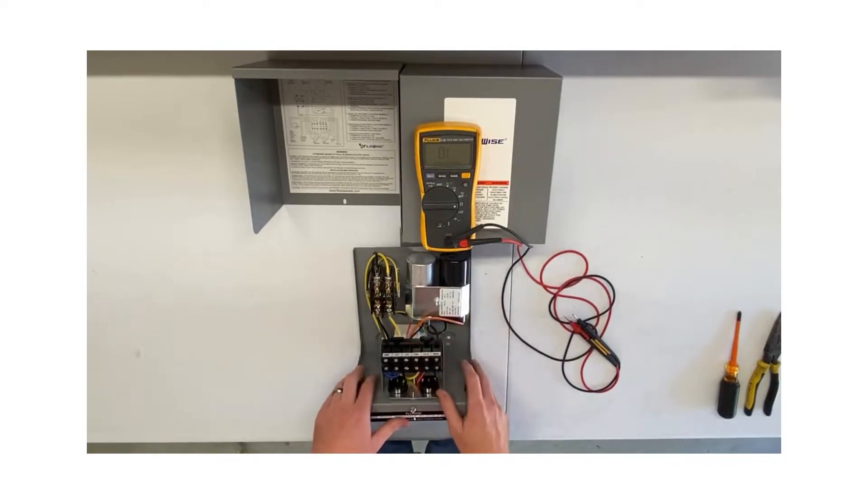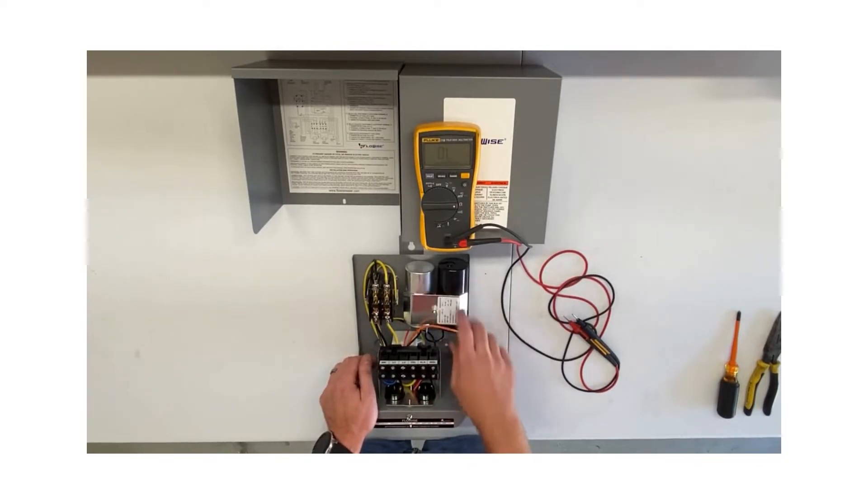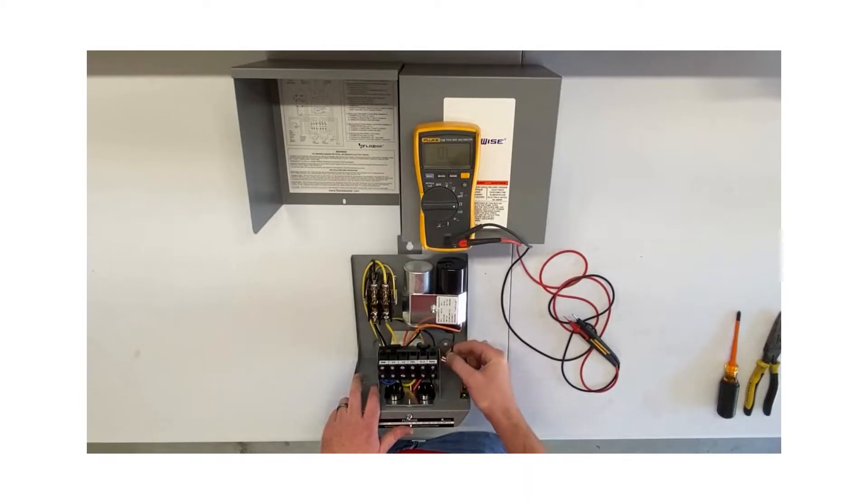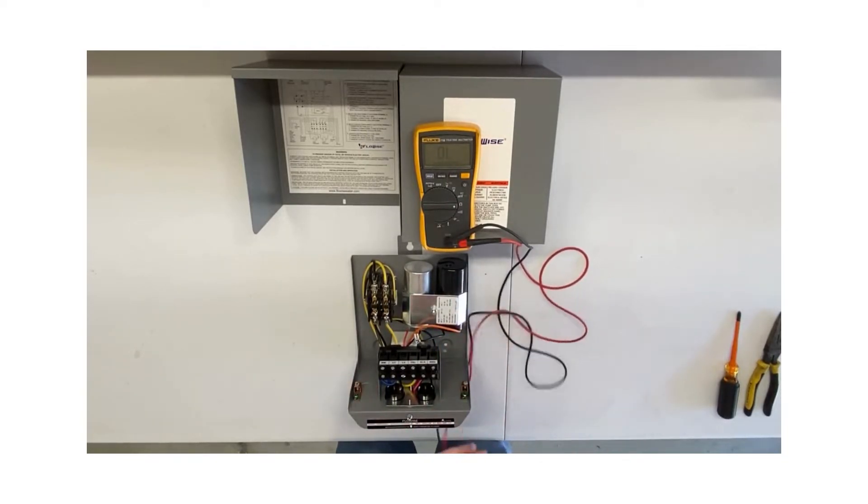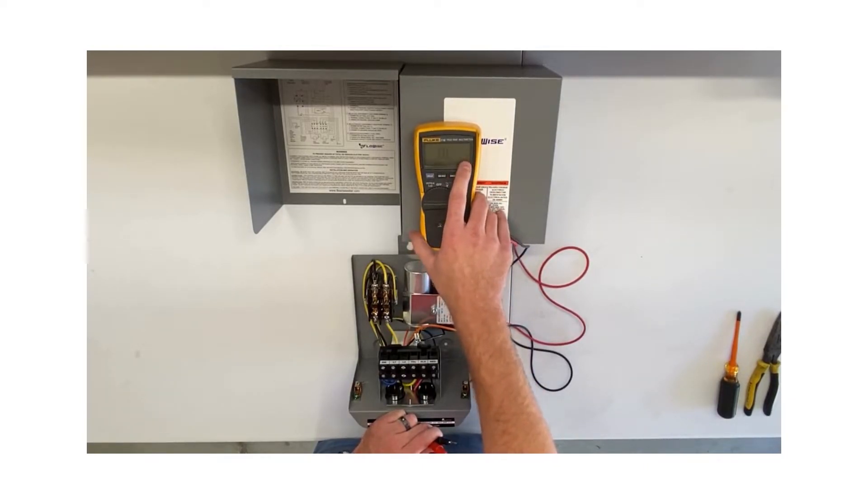This is probably one of the most common points of failure in the box—the capacitor. Our testing procedure is going to be the same for the start or run capacitor. The first thing you're going to do is remove one lead from each capacitor. A little trick is there's a wire that jumps between each capacitor, so if I remove it just from one side, that serves as removing a lead off of each capacitor.